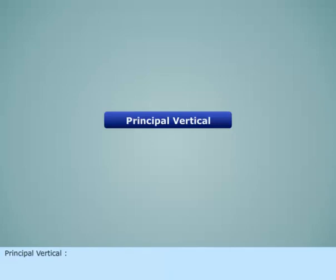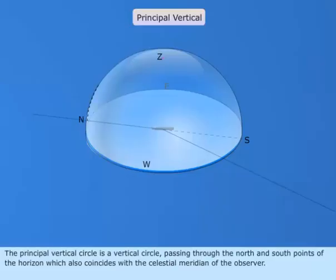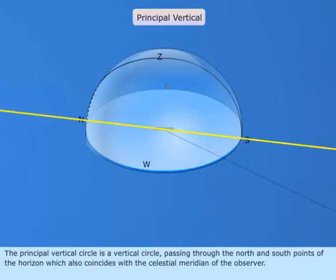The Principal Vertical Circle is a vertical circle passing through the north and south points of the horizon, which also coincides with the celestial meridian of the observer.